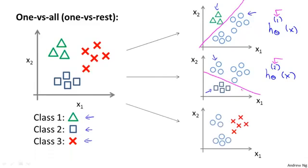And finally, we do the same thing for the third class and fit a third classifier, h superscript 3 of x, and maybe this would give us a decision boundary that separates the positive and negative examples like that.